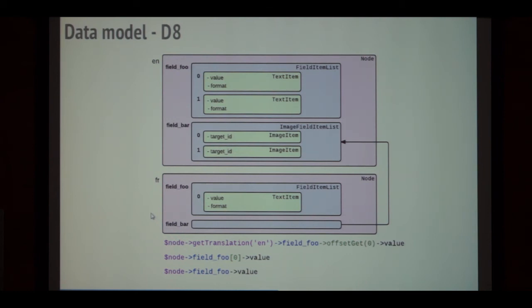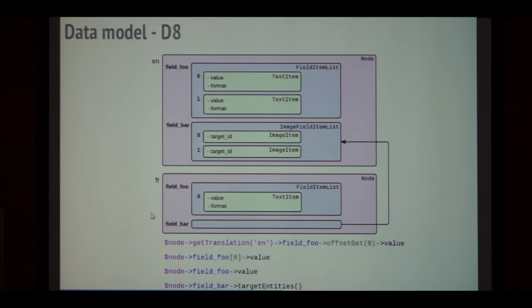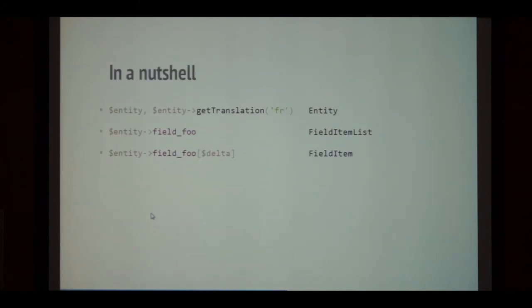Those are classed objects, so we can put business logic in those classes. On the image field item list class we can have a get_target_entities method that loads the entities for you — you don't have to manually iterate the values, load the field, load the file, and process it back. Each field type brings its own class with the business logic that makes sense. In summary: entity is an entity class; entity->getTranslation(langcode) is also an entity; entity->field_foo is a FieldItemList; entity->field_foo[delta] is a FieldItem. Syntax: entity->field_foo[delta]->property, and you can skip the delta brackets for delta zero.